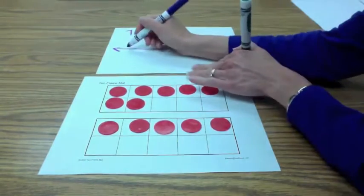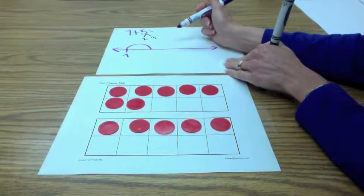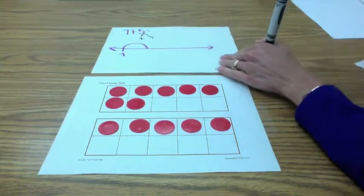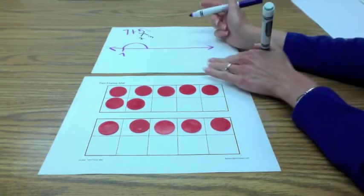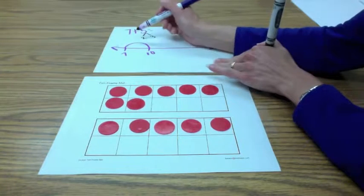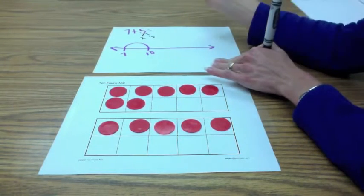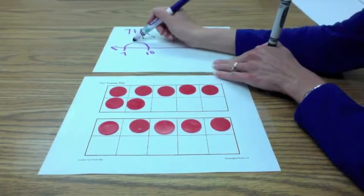And you did that because you wanted to go from 7 to what? 7 to my easy 10. And what did you have to add to 7 to get to your easy 10? I had to add 3.